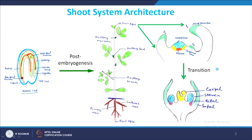Welcome back to Plant Developmental Biology course. We are studying today shoot development, particularly the organogenesis part. In the last class, we studied shoot apical meristem maintenance, and here in this class we are going to study organogenesis.